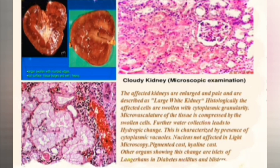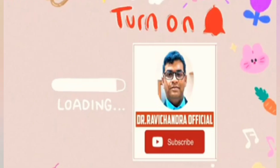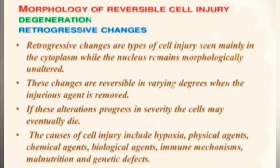Other organs which show cloudy change or hydropic change include isolated cells of the islets of Langerhans. Cloudy swelling occurs due to failure of the cellular sodium pump, which allows excess sodium to enter the cells, eventually leading to an increase in cellular water. Hydropic degeneration is very common and cloudy swelling also occurs with hypokalemia due to vomiting or diarrhea.